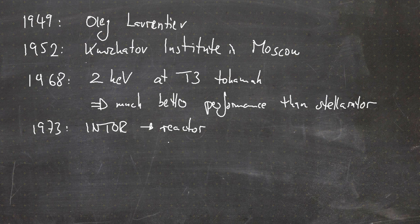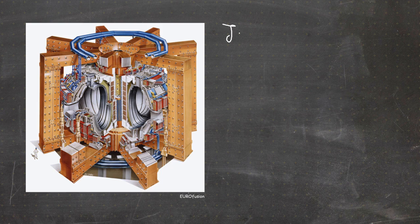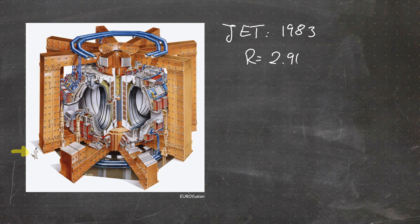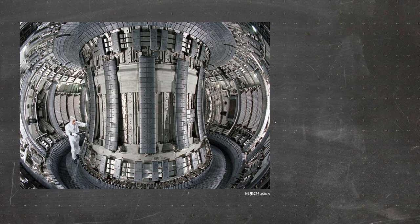In 1973 at the IAEA conference in Novosibirsk, the INTOR concept was first discussed — a predecessor to ITER and the first concept for an international reactor. The next important experiment to mention is certainly JET — the Joint European Torus — put into operation in 1983. JET is a massive device with an iron core; a human being standing next to it gives an idea of its size. It has a major radius of 2.96 meters and an average plasma radius of 1.25 meters, and is located in southern England at Culham.